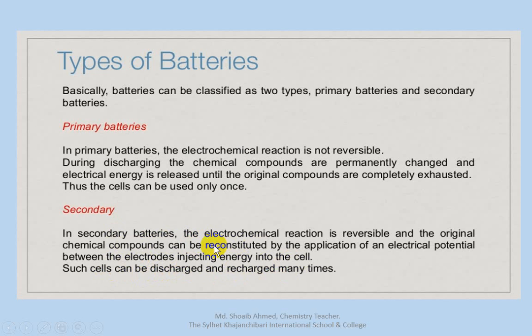Secondary batteries can be used many times. An example of a secondary battery is the lead storage battery. Primary batteries, such as the dry cell, can only be used one time.